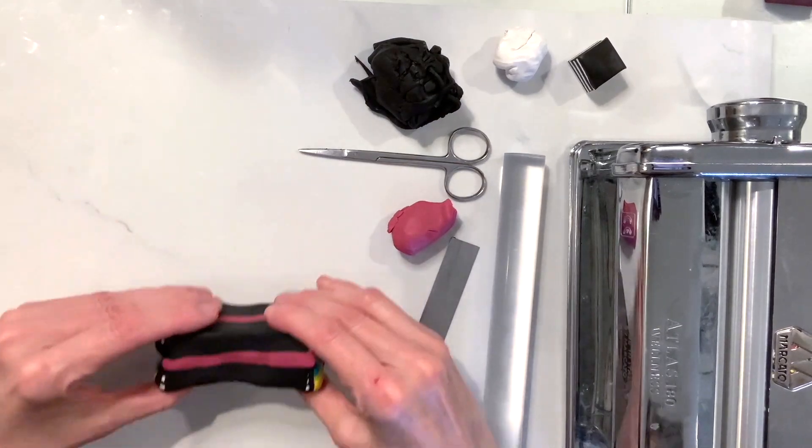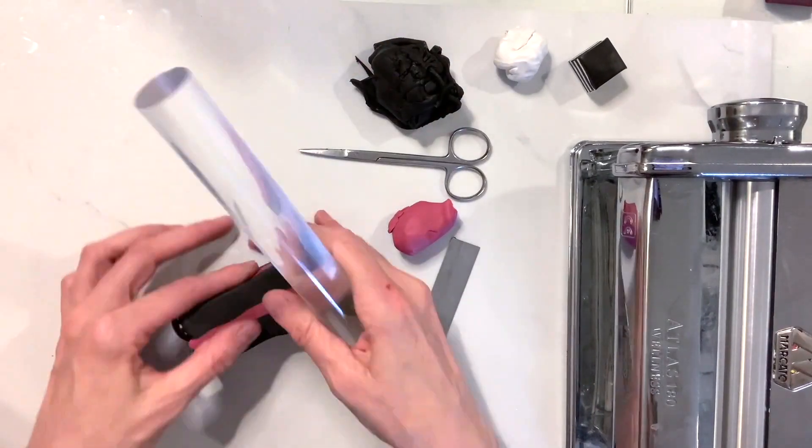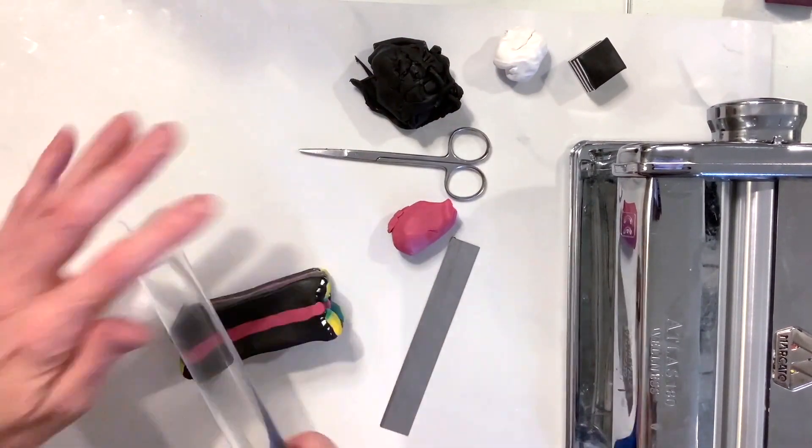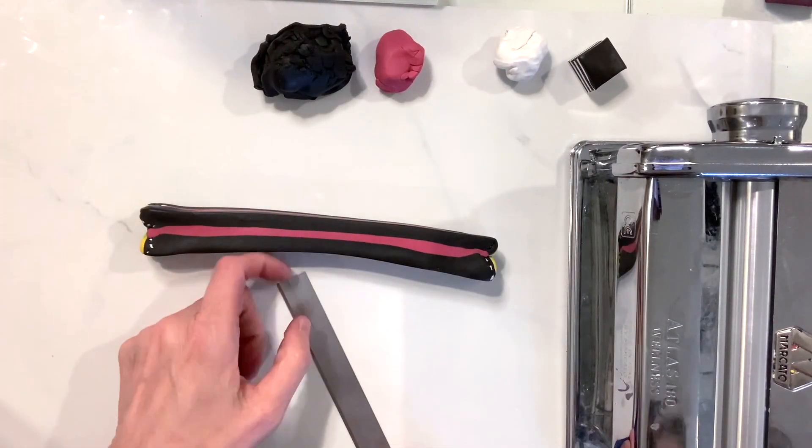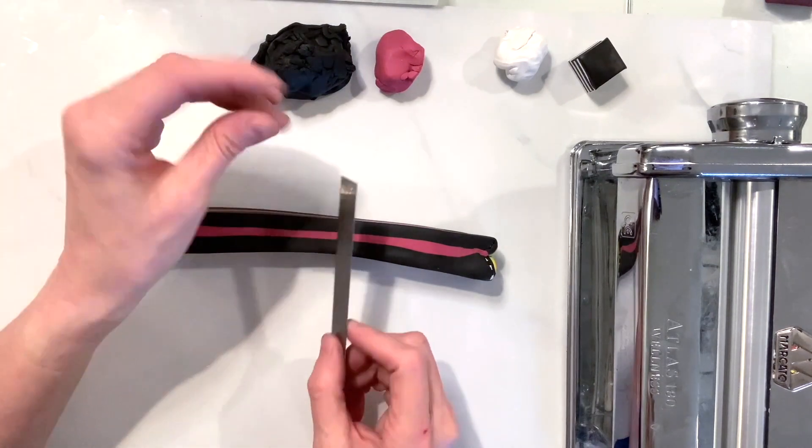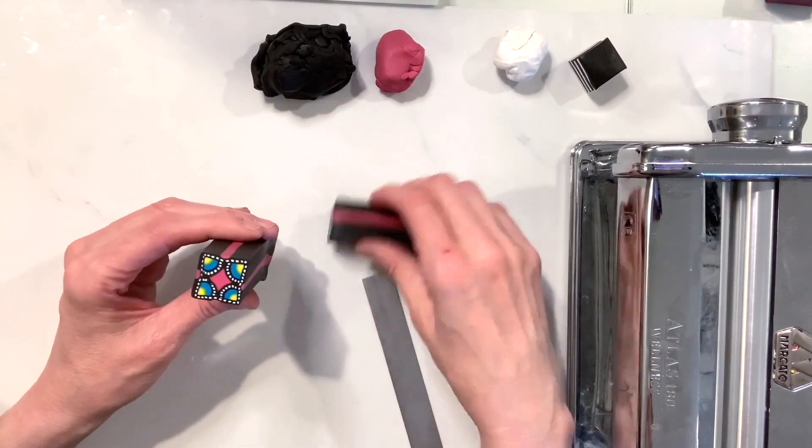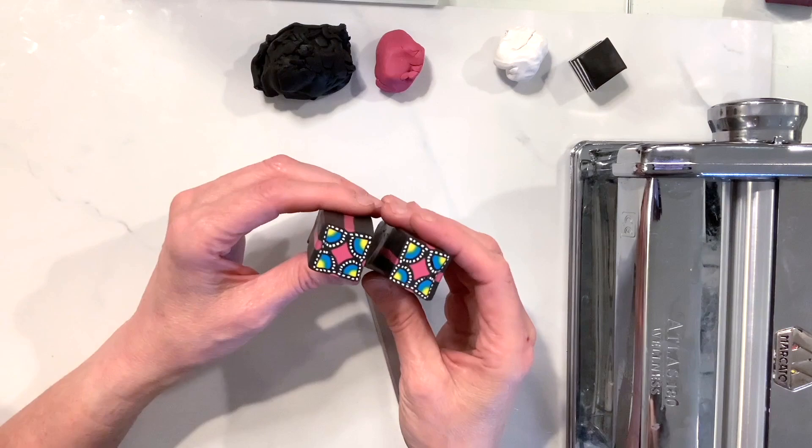After you have used your hands to push in on this cane, using your acrylic roller to lengthen it out and then slightly pulling this cane, let's go ahead and now cut this in the center and see what we have. There we have it—our final result of our square bullseye cane.